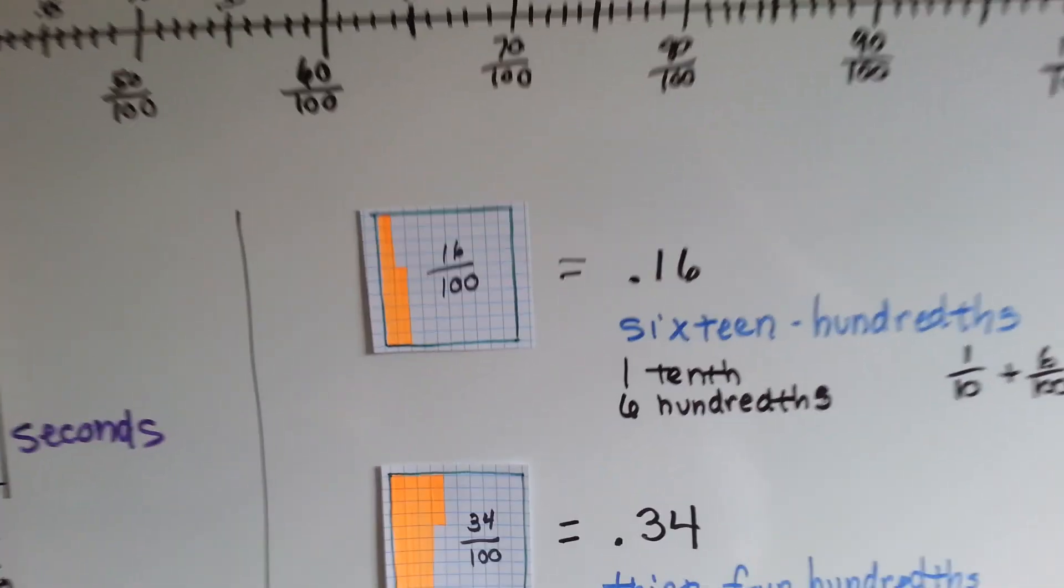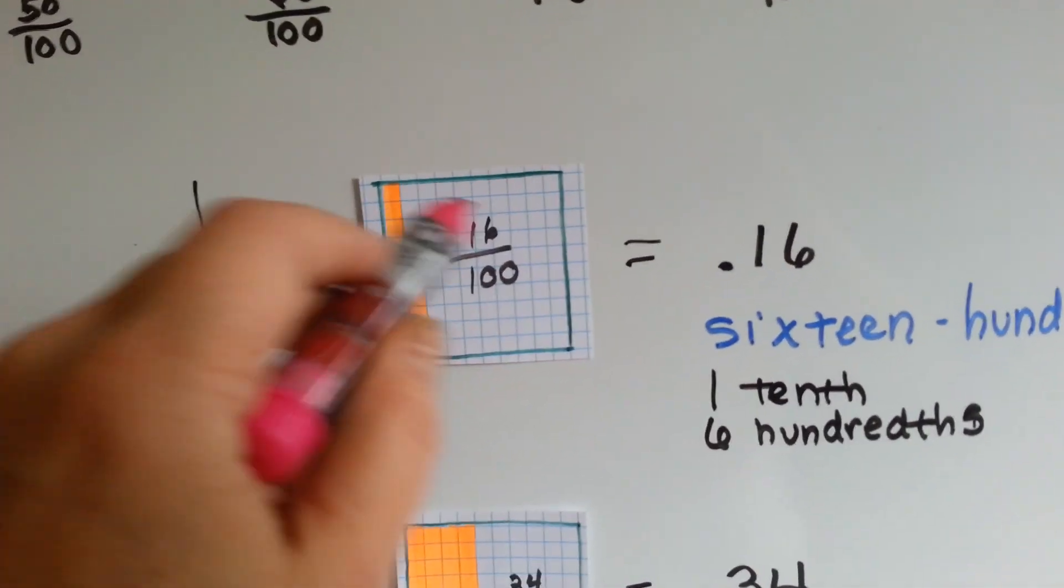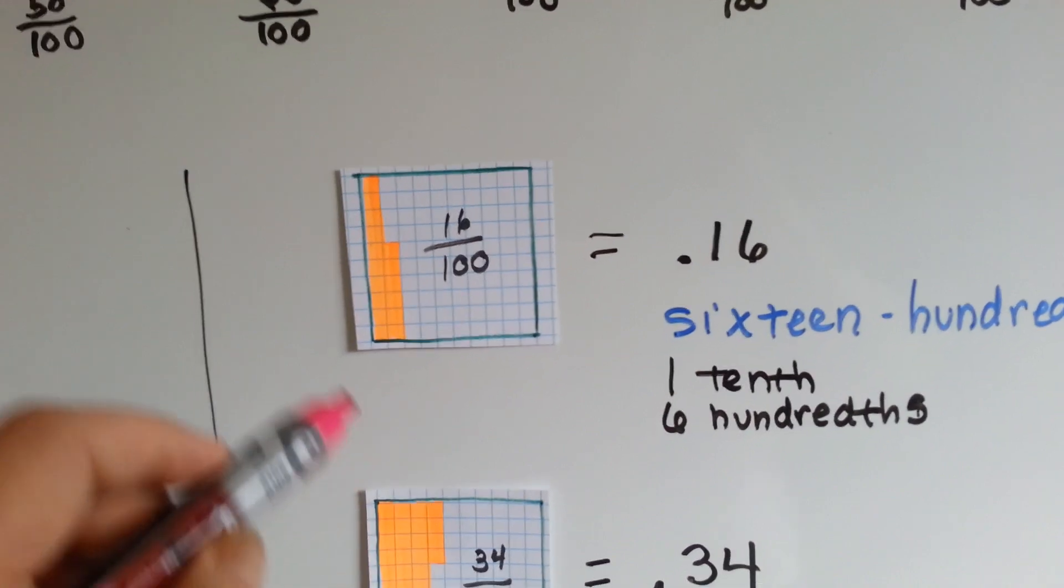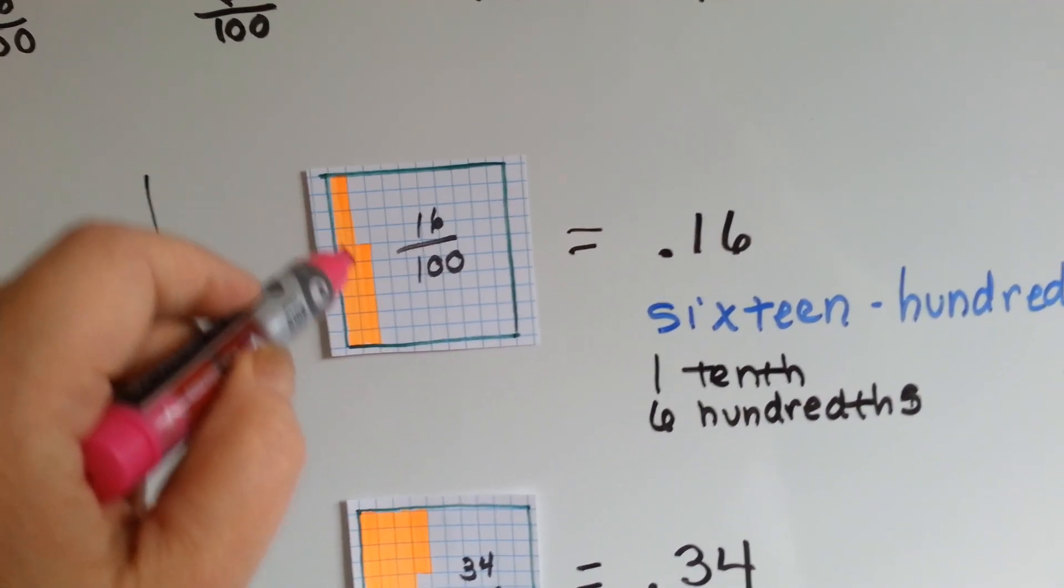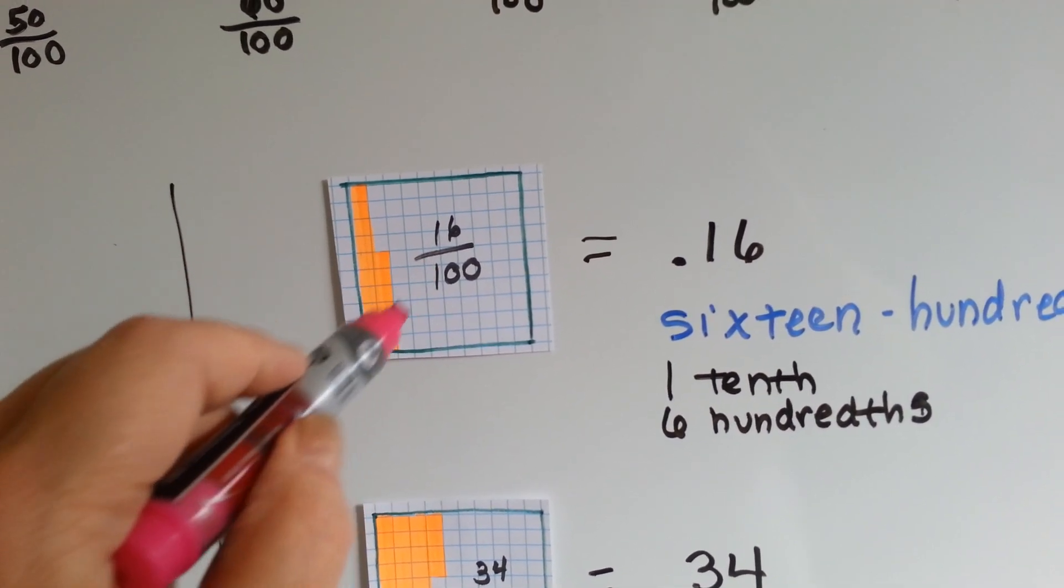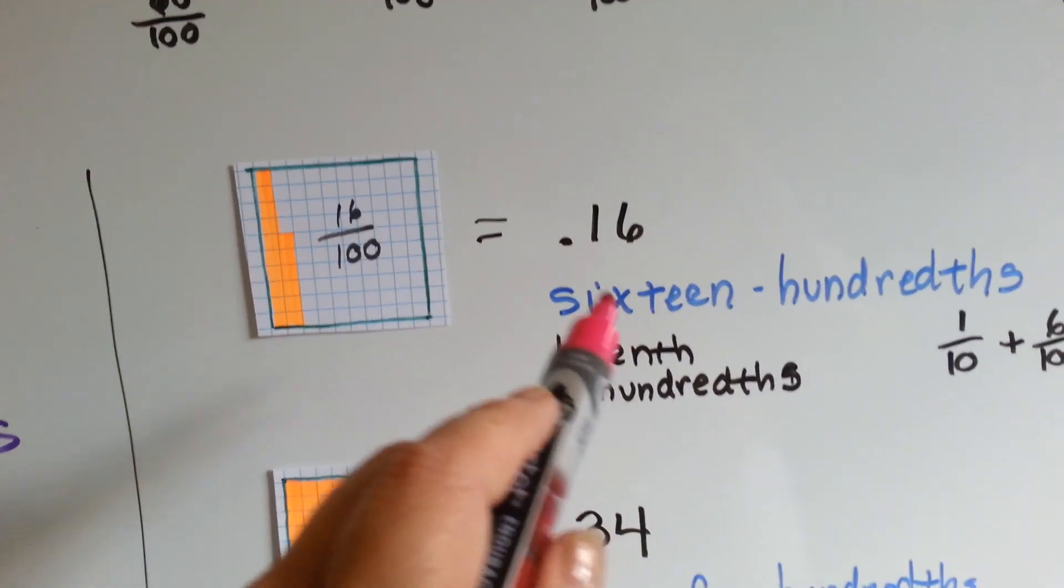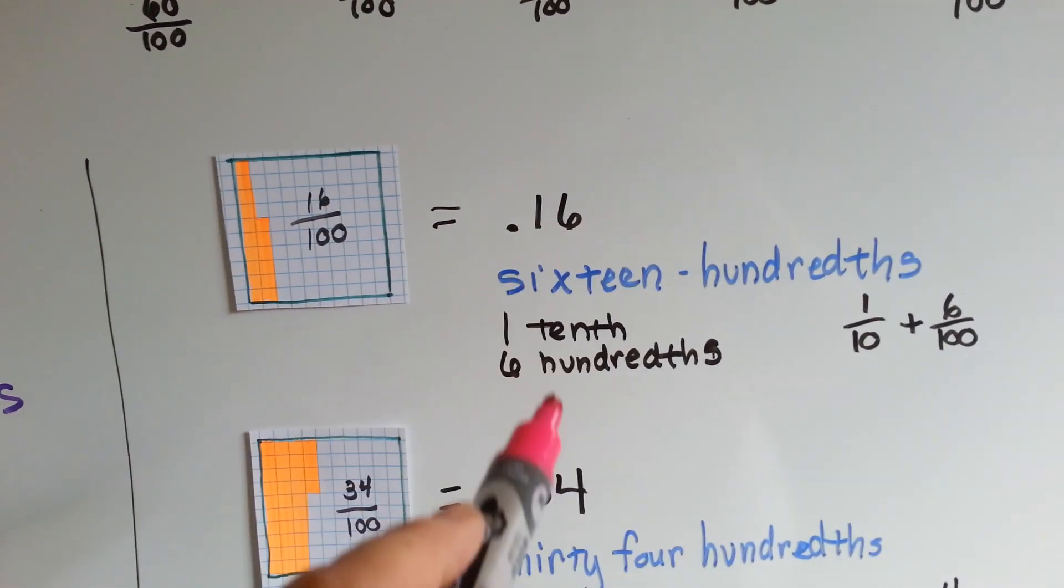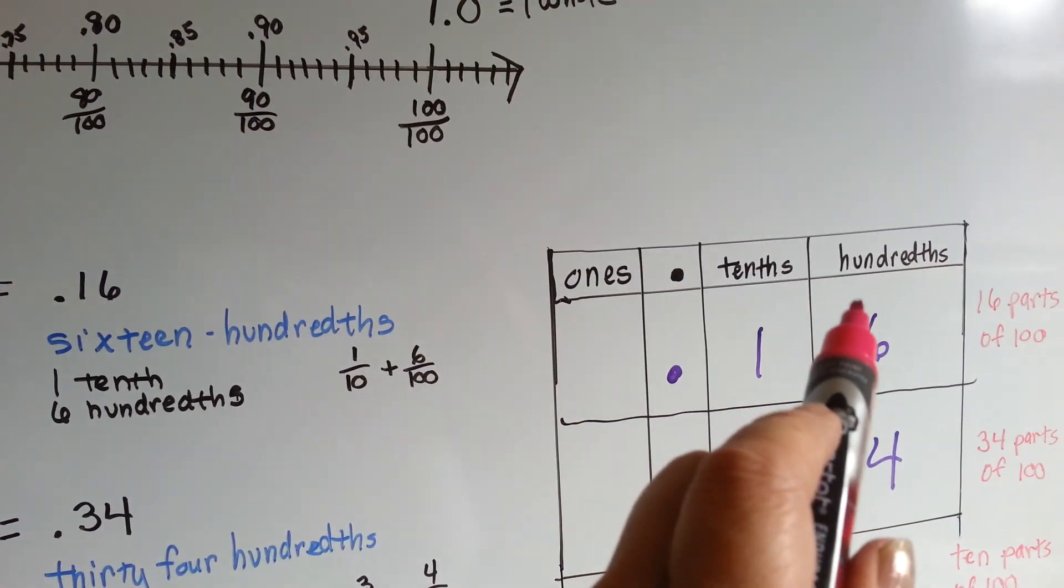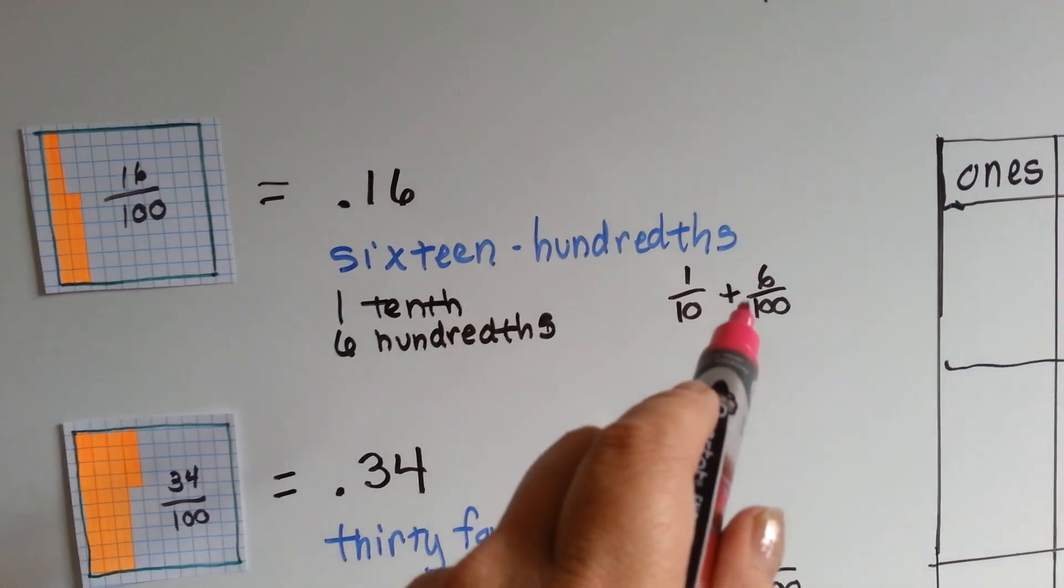My little green square here has one hundred little squares in it. There's ten going this way and ten going this way. Here's ten, and six more make sixteen orange ones. Sixteen of the hundred are orange. Point one six is sixteen hundredths. It's considered one tenth and six hundredths. One tenth and six one hundredths.